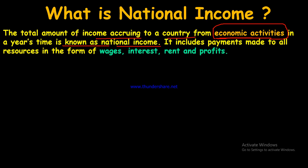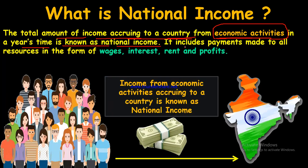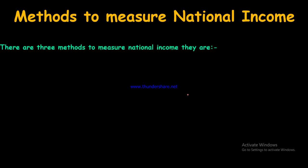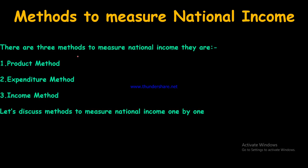To summarize: the total amount of income accruing to a country from economic activities in a year's time is known as national income. There are three methods to calculate national income: the first is the product method, the second is the expenditure method, and the third is the income method.